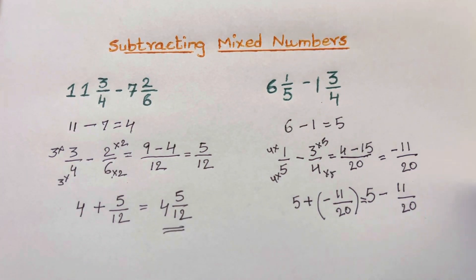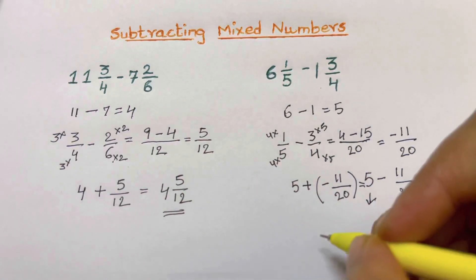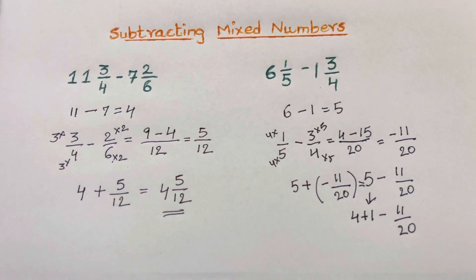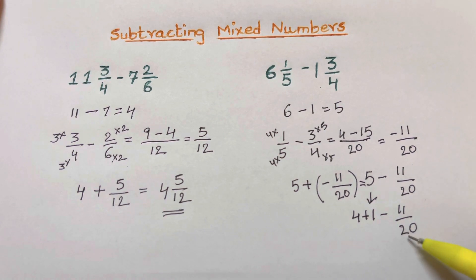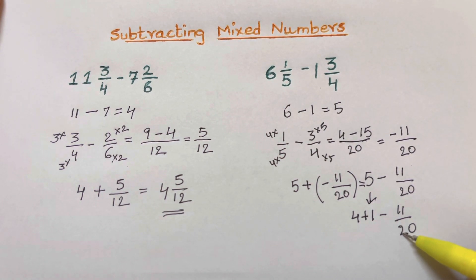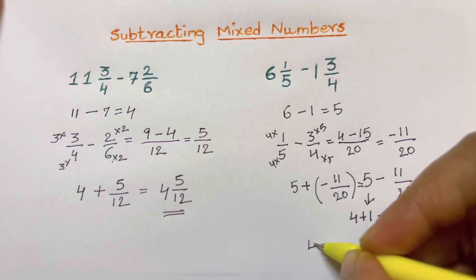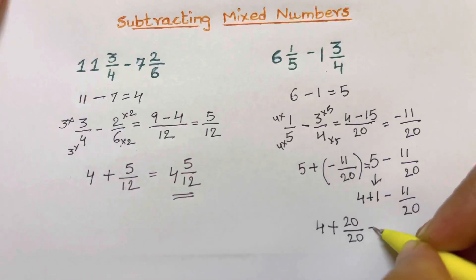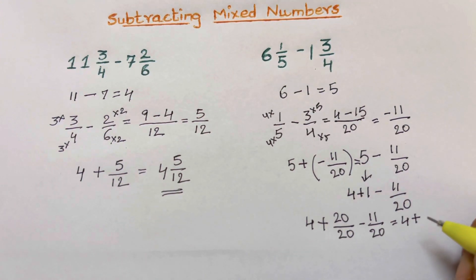To handle 5 minus 11 over 20, I'll break down 5 into 4 plus 1. Now I can take that 1 whole and write it as a fraction with the same denominator: 20 over 20. So we have 4 plus 20 over 20 minus 11 over 20, which gives 4 plus 9 over 20.